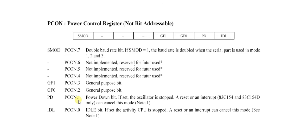Bit 1 is PD, which means power down bit. If PD is set, then the oscillator is stopped. A reset or an interrupt can cancel this mode, so this is used basically to power down the controller.